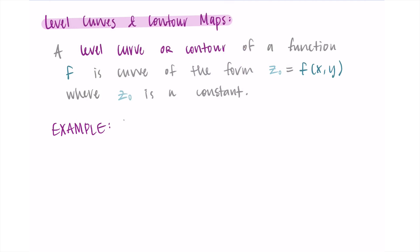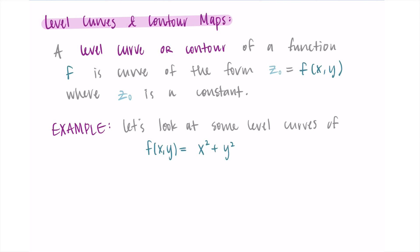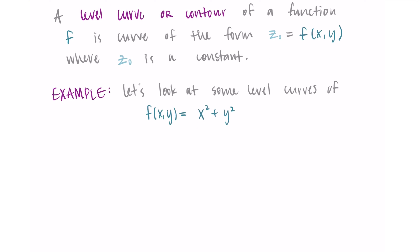Let's look at some level curves for a specific function: f of x, y equals x squared plus y squared. If you've never seen this before you probably don't know what this shape looks like in three dimensions. You might notice that x squared plus y squared looks familiar — in two dimensions a circle has equation x squared plus y squared equals r squared, centered at the origin. So this three-dimensional shape must have something to do with circles.